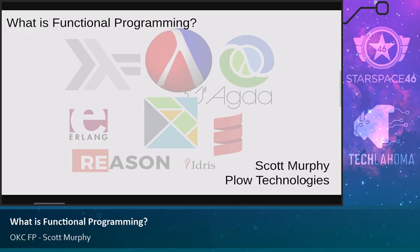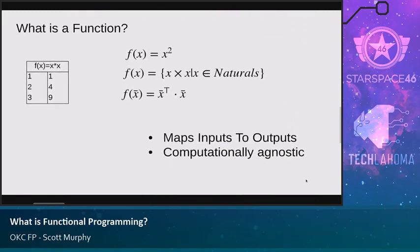If you're going to talk about functional programming, you first need to talk about what a function is. At its base, a function is a map between inputs and outputs. Specifically, it's a map so that for any set of inputs, you get one output.